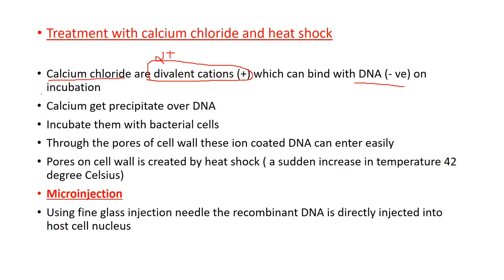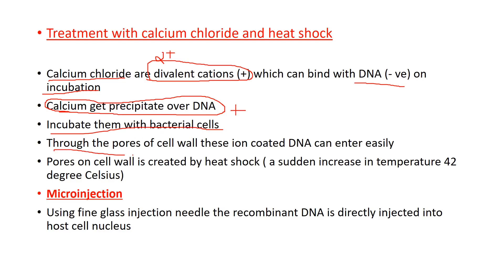We are going to incubate them. P-DNA is negative, calcium is positive — they are attracted to each other. They are precipitated: calcium precipitates over the DNA because they are attracted. We incubate them with bacterial cells. Now the DNA is effectively positive because of the calcium coating. Through the force of the cell wall, these ion-coated DNA molecules can easily enter — very easily.